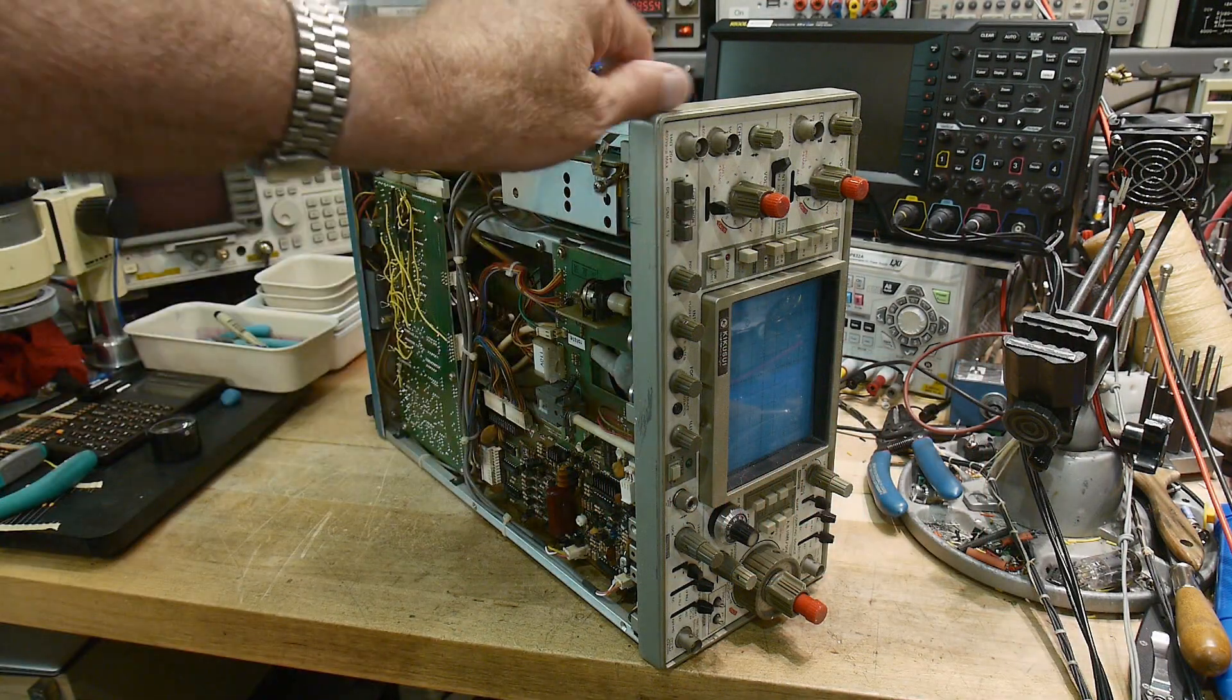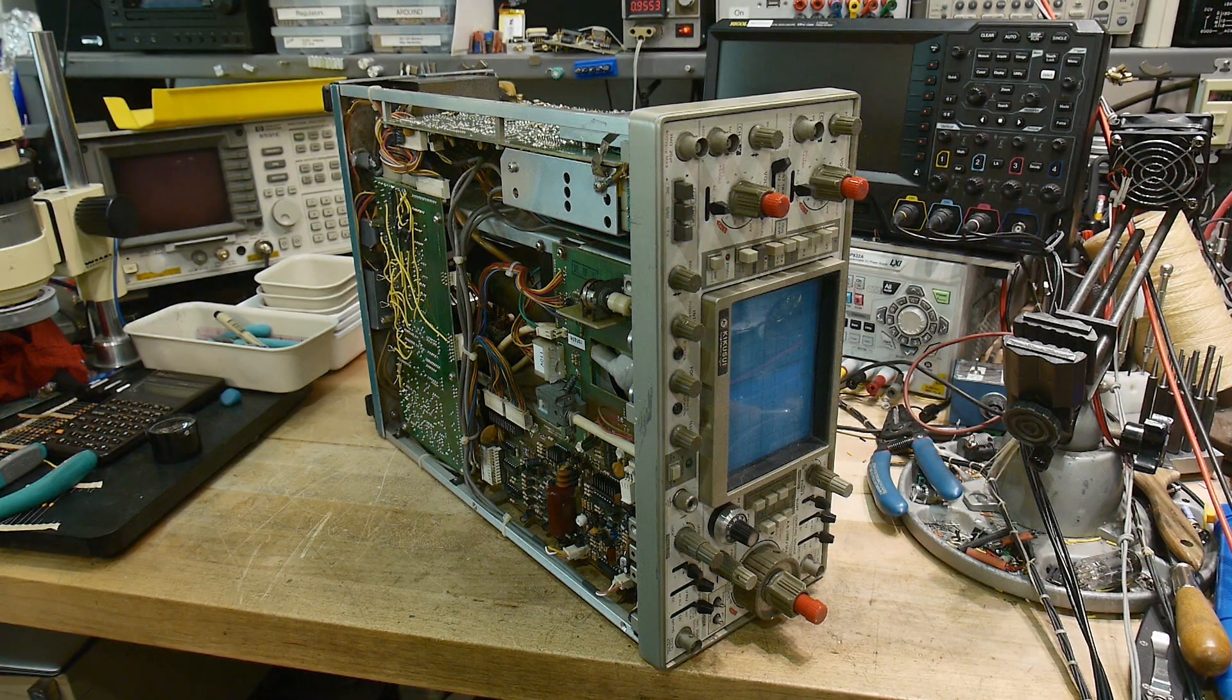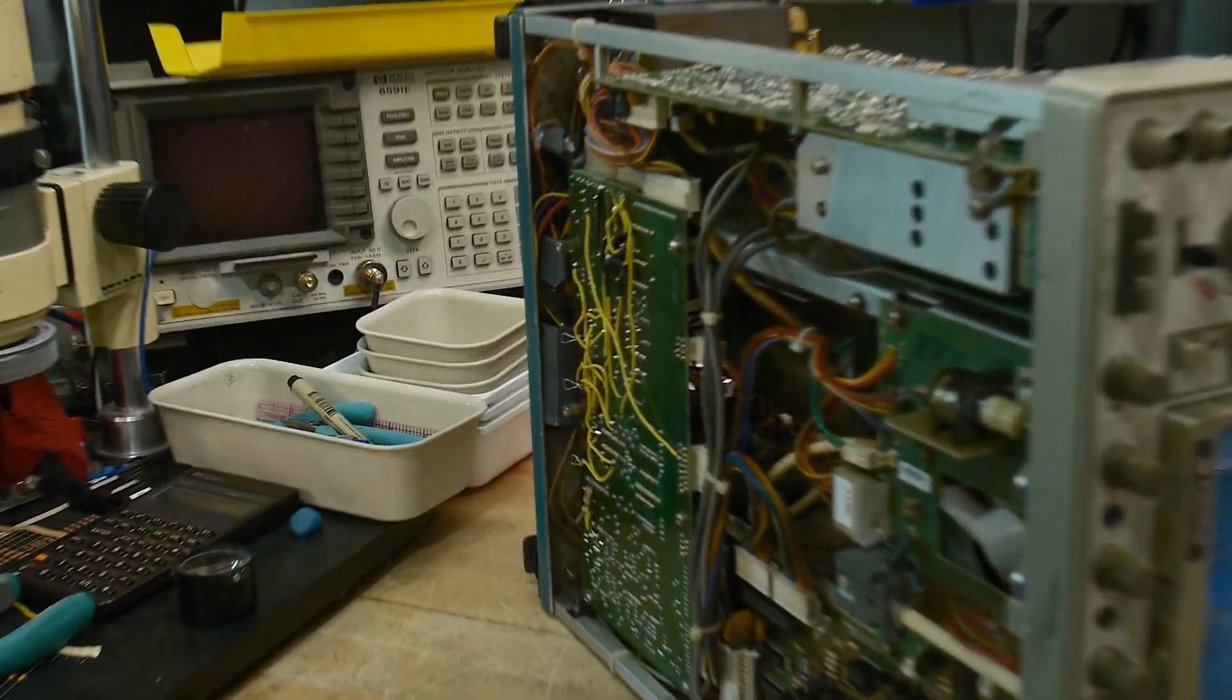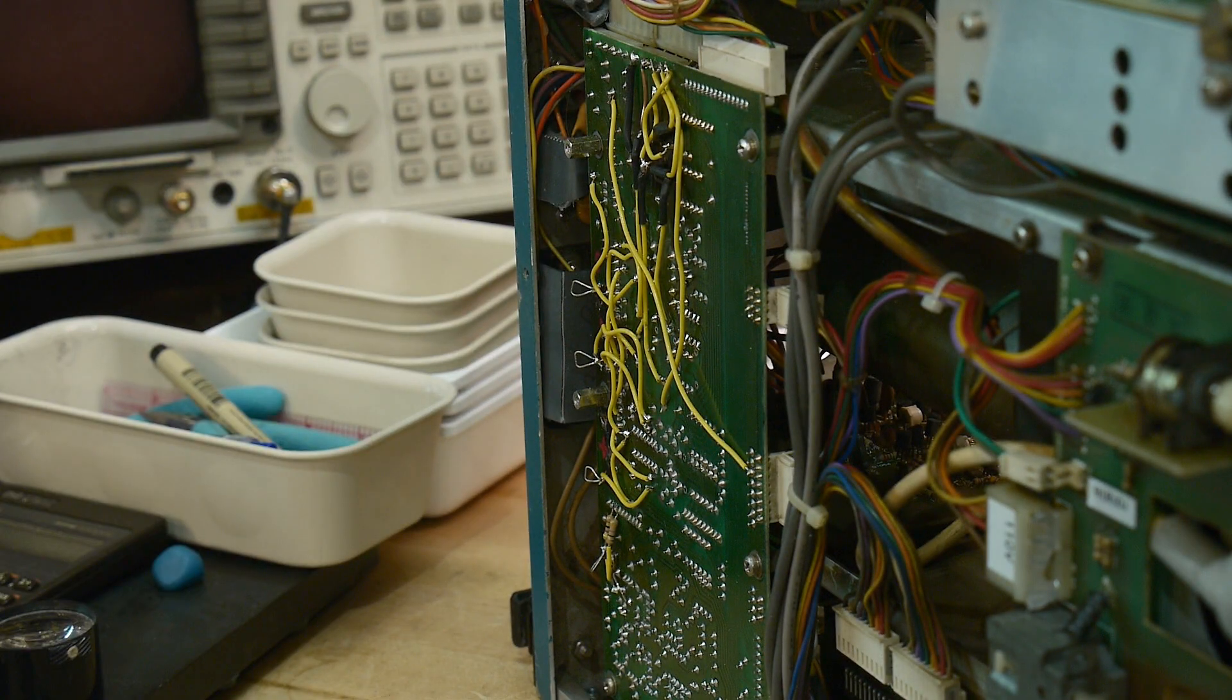Alright, some of you will remember this, my Kikusui 6100 that I did a lot of work on. You can see I've redone all the power supply section and everything. I basically got this entire scope working except it wouldn't make a picture on the front.